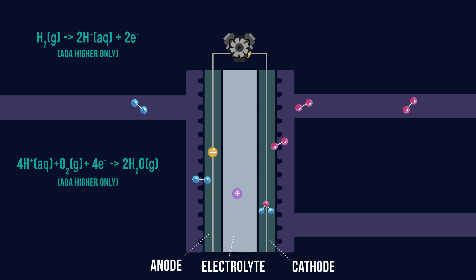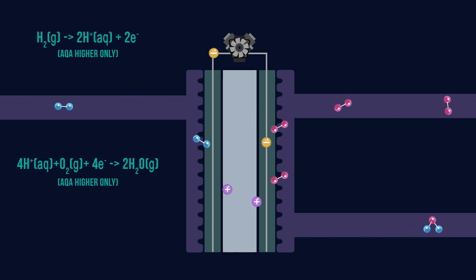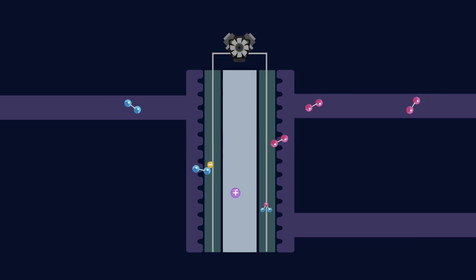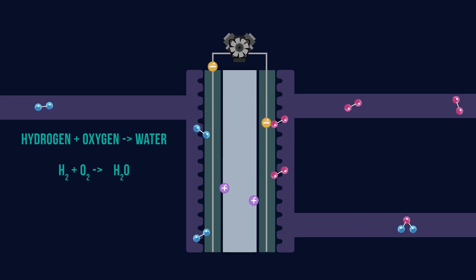This is the overall reaction that takes place then in a hydrogen fuel cell. So the word equation would be hydrogen plus oxygen goes to water. Chemically we could express this as H2 plus O2 goes to H2O. And remember that we need to balance this by putting a 2 in front of the H2 and a 2 in front of the H2O.